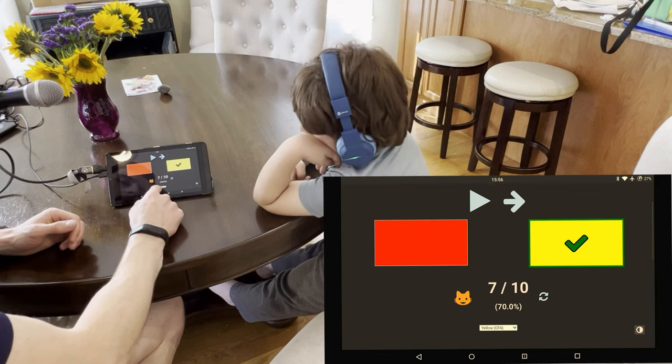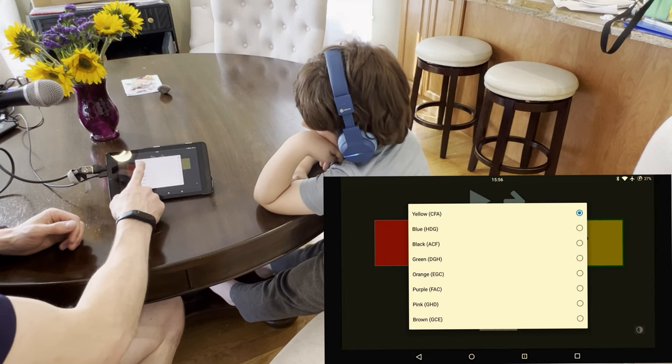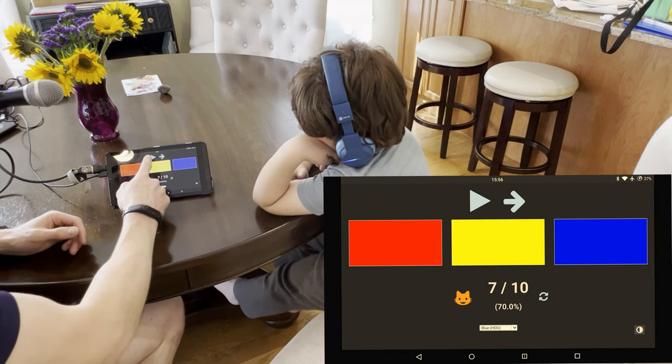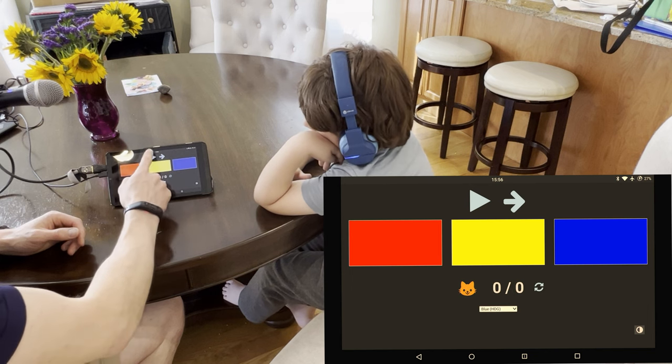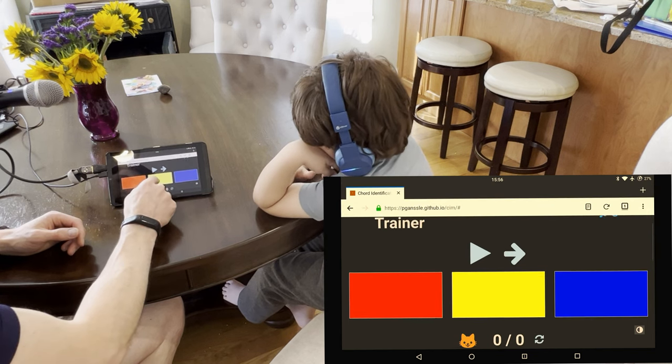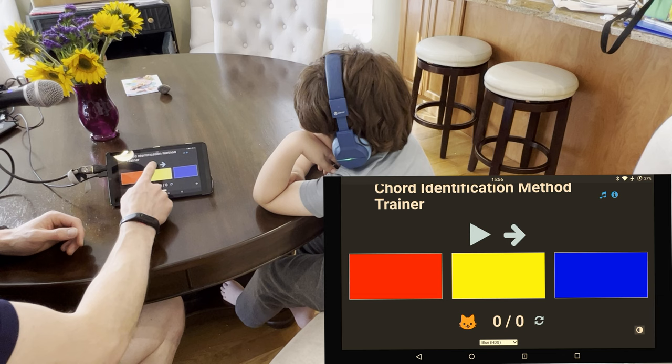So to introduce the next chord, you just go to this pull down menu, and then you'll add the blue chord, and you can reset the stats. And then, here, play one.